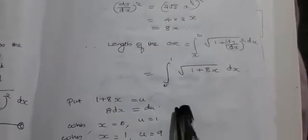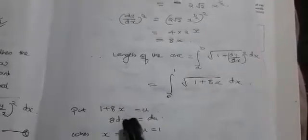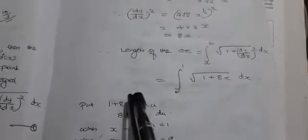We use the substitution u = 1 + 8x. Differentiating with respect to x gives 8 dx = du, so dx = du/8. Changing the limits: when x = 0, u = 1; when x = 1, u = 1 + 8(1) = 9. So ∫ from 0 to 1 of √(1 + 8x) dx = ∫ from 1 to 9 of √u · (du/8).